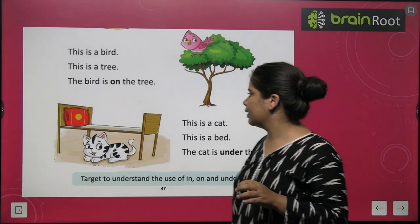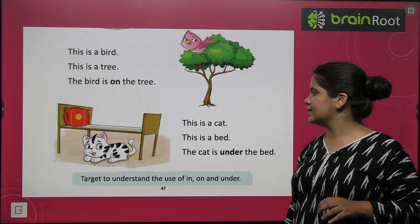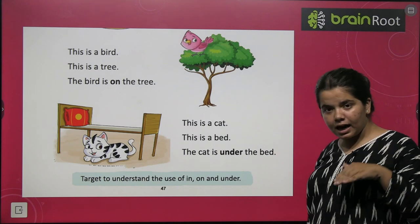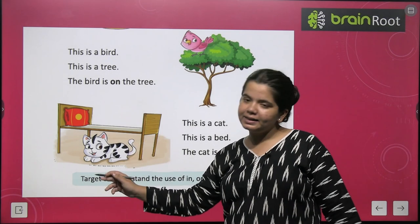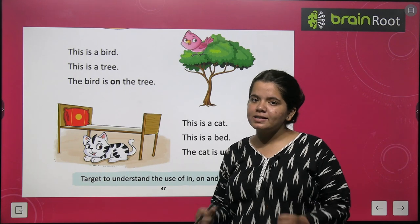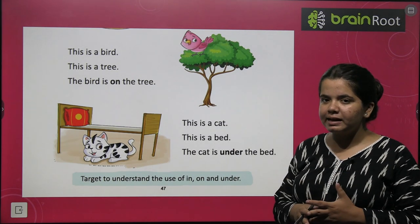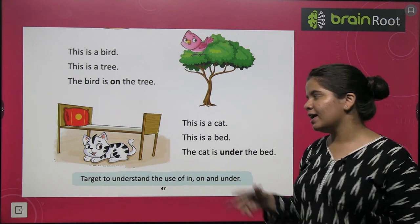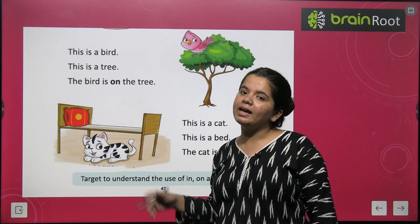We will talk about a cat. This is a cat. This is a bed. The cat is under the bed. Under means below. It happens when dogs or cats are frightened or scared. So what is under? Under means below.